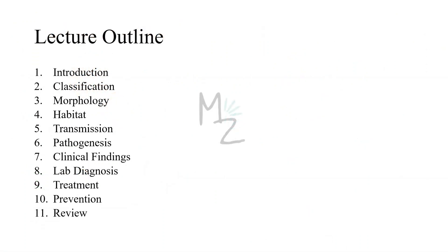Lecture outline. We are done with the introduction and classification. Now we'll be looking at morphology, habitat, transmission, pathogenesis, clinical findings, lab diagnosis, treatment, and prevention, and at the end, as usual, we'll review the lecture.